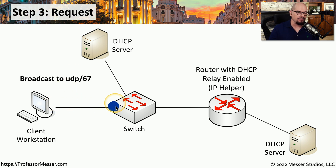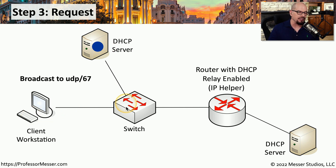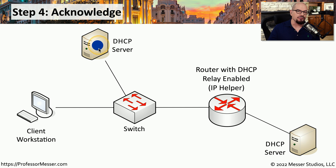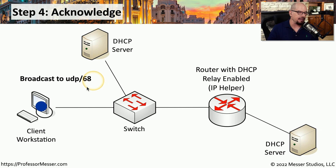This broadcast contains a formal request to take the offer that was originally sent. Since this is a broadcast, it is sent to all devices on the local subnet. Now that the DHCP server has received this formal request, it begins step four, the Acknowledgement phase, where it sends a message back to the client workstation over UDP port 68, confirming that the request has been acknowledged and the device can assign itself the configuration settings included in the offer. This four-step DORA process happens every time a device connects to the network and needs to obtain an IP address from a DHCP server.